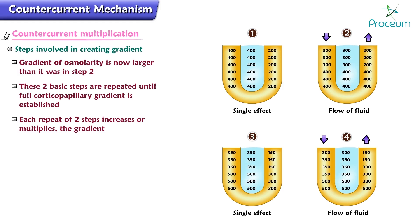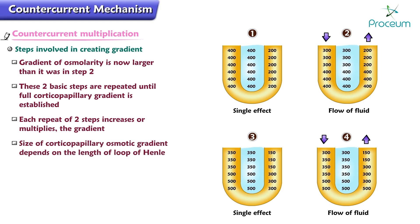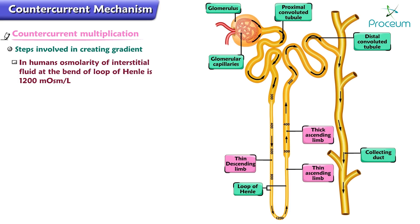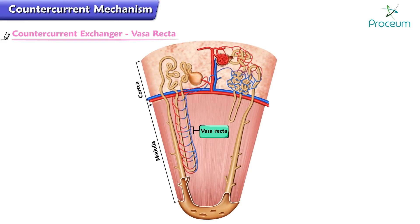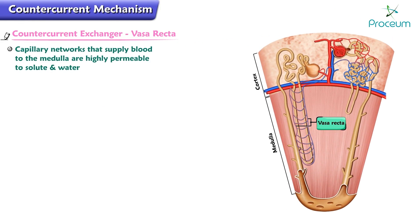These two basic steps are repeated until the full corticopapillary gradient is established. Each repeat multiplies the gradient. The size of the corticopapillary osmotic gradient depends on the length of the loop of Henle. In humans, the osmolarity of the interstitial fluid at the bend of the loop of Henle is 1200 milliosmoles per liter, but in species with longer loops of Henle — like desert rodents — the osmolarity at the bend can be as high as 3000 milliosmoles per liter.